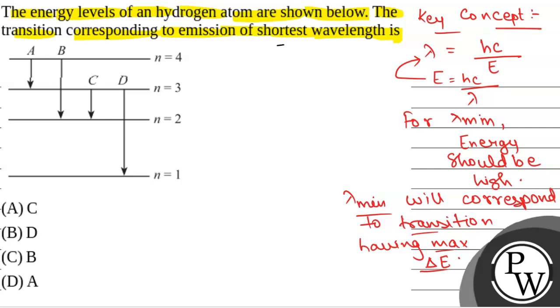We know that energy of the nth shell is given by -13.6 Z²/n². So we will calculate the energy of each shell. For n equals 4, E₄ equals -13.6 times Z² over n². For hydrogen atom Z equals 1, so -13.6 × 1²/16, which equals -0.85 electron volts.